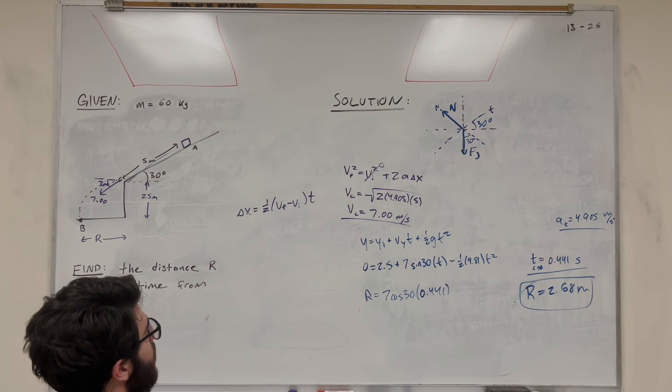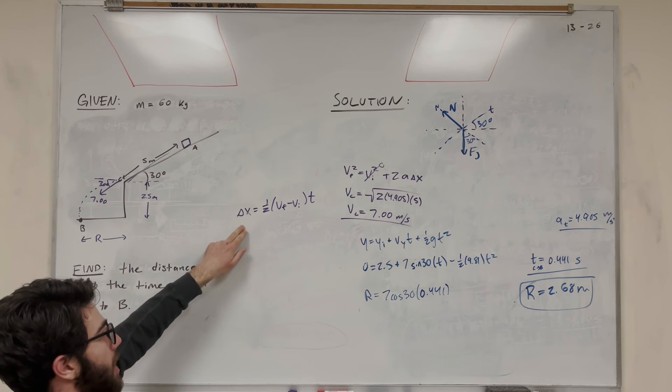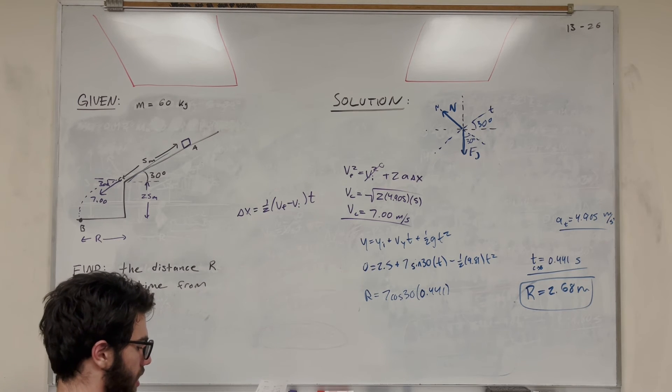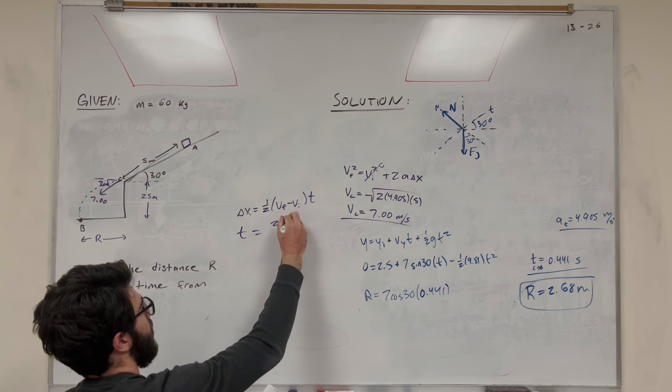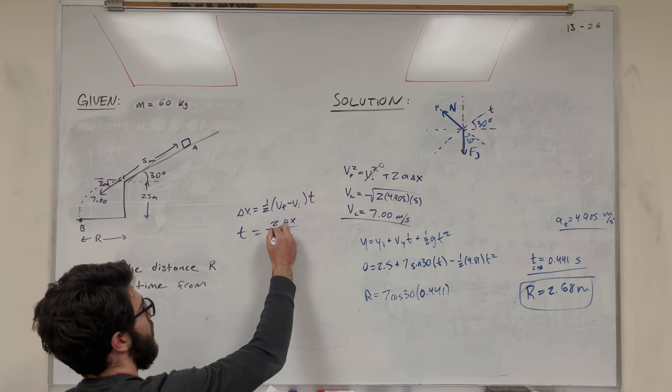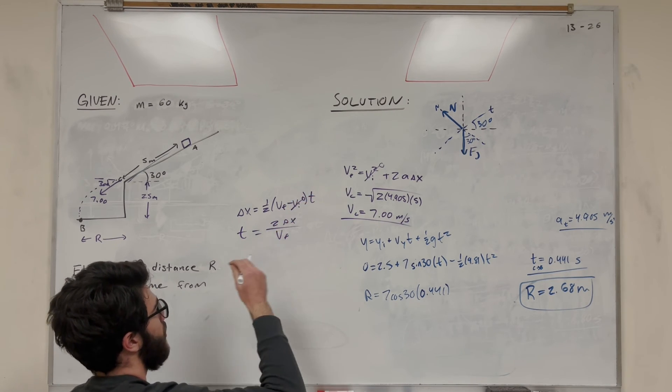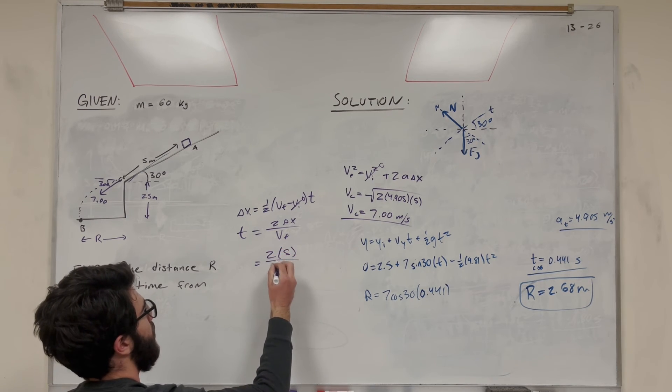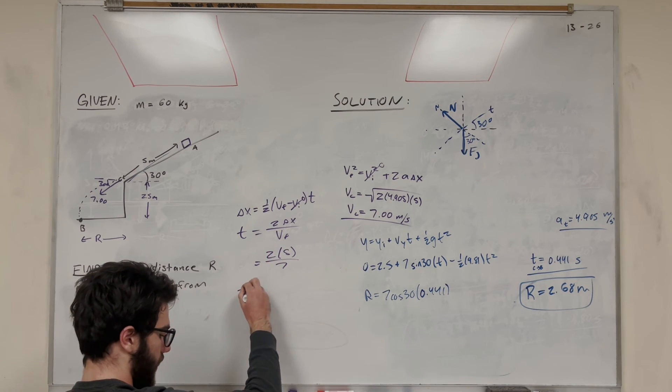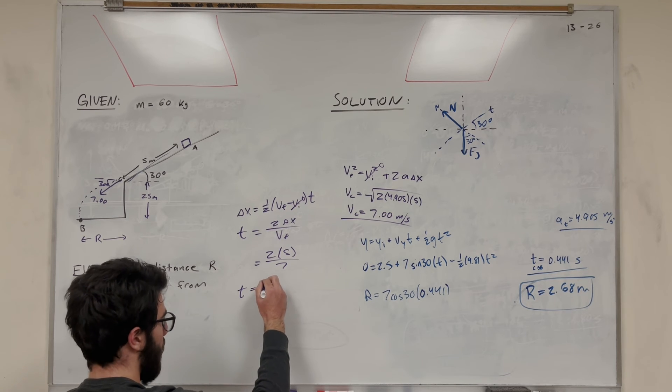So we know all of these. We know V final, we know V initial, we know change in X, so it's just solving for T. So if you do this, you're going to get T is equal to 2 delta X over V final, because V initial is equal to 0. So it's going to be equal to 2, change in position 5 over 7, which is velocity final, and you find that time is 10 over 7.